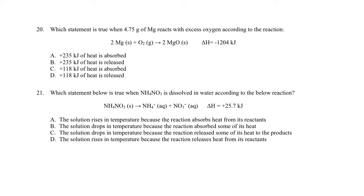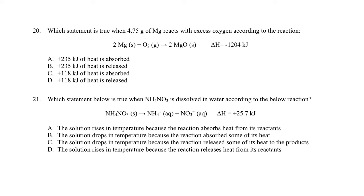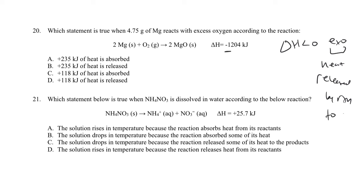A chapter five question on heat: we have 4.75 grams of magnesium reacting with oxygen. To determine if heat is released or absorbed, look at the sign of delta H. Delta H less than zero (negative) is exothermic — heat is released by the reaction to the surroundings. So the surroundings get hotter. If delta H were greater than zero, that would be endothermic, meaning the reaction absorbs heat.